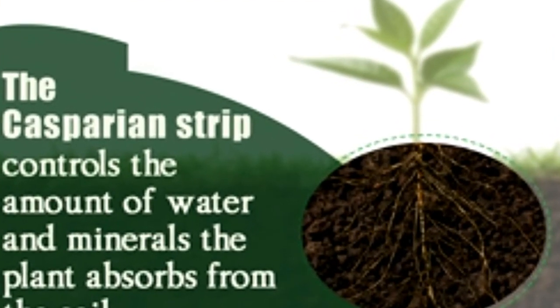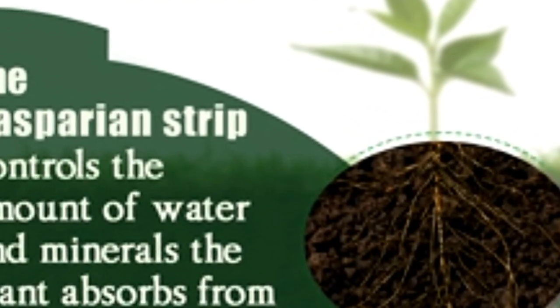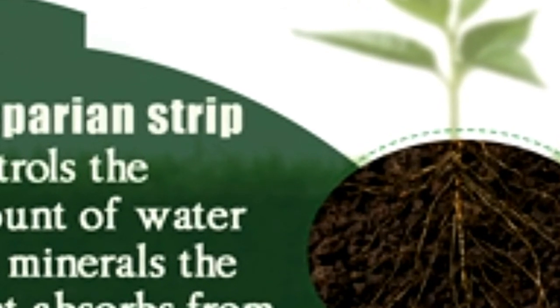Did you know? Despite being discovered way back in the 19th century, the Kasparian strip's exact chemical structure is still under debate.